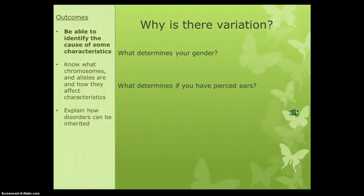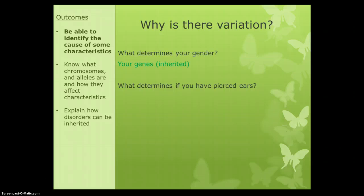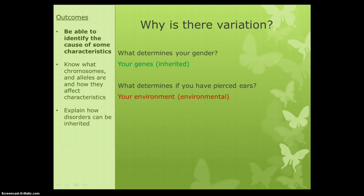An example of a difference between people would be gender, so whether you're male or female. We need to think about what determines your gender. That's going to be your genes, so that means it's something that you have inherited — something that you got from your parents. Another type of variation would be whether or not you have pierced ears. That would be your environment, so we would say that would be an environmental variation, because you're not born with pierced ears; it's something that you decide to do, and you're often influenced to do it because of your environment. So those are the two types of variation we're going to focus on.